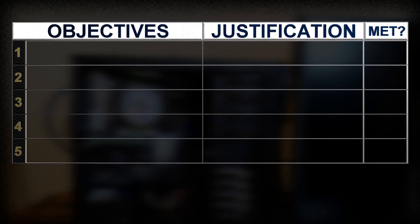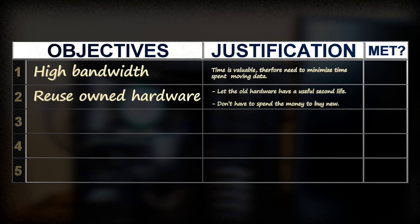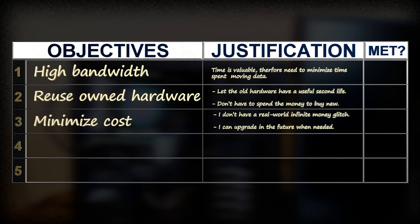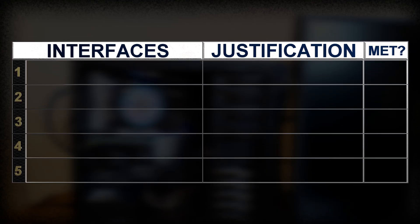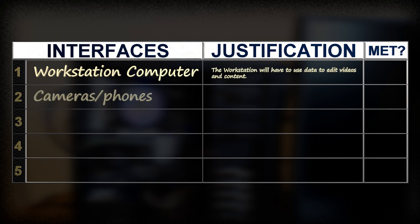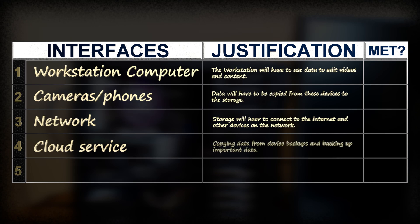The objectives I would like to see include a high speed connection, like a 10 gigabit network connection or better. I would also like to reuse hardware I already have and minimize cost — I don't like to throw away electronics if they're still usable. As for interfaces, the storage device will need to connect with my workstation computer, data from phones and future cameras will need to be transferred to it, and there will need to be network connectivity for cloud data services.